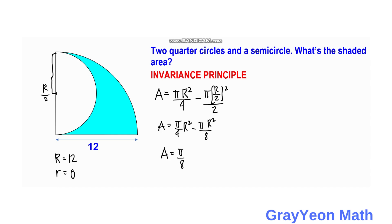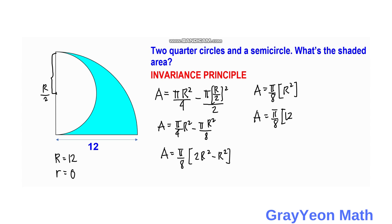Factoring out pi over 8, we get 2R squared minus R squared inside the parentheses, which simplifies to R squared. Since R equals 12, the area equals pi over 8 times 12 squared, which is pi over 8 times 144, giving 18π square units. That is our answer for the second method.